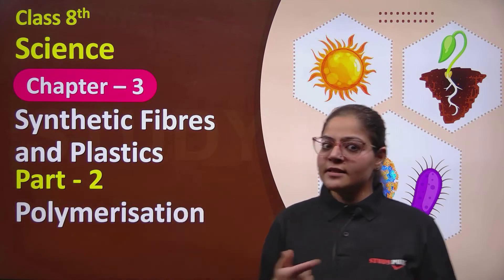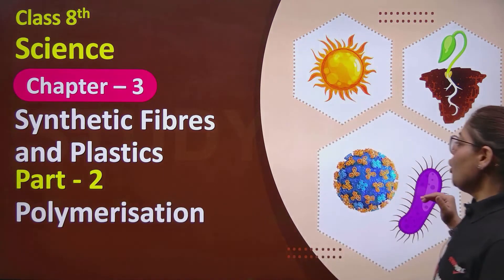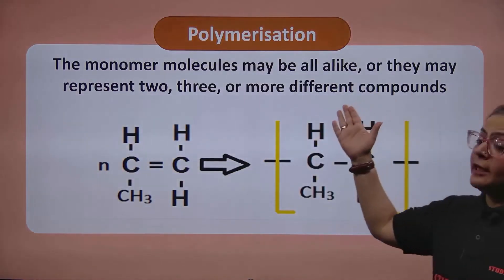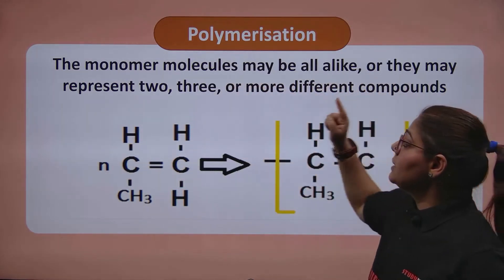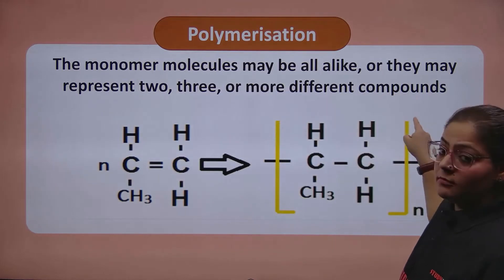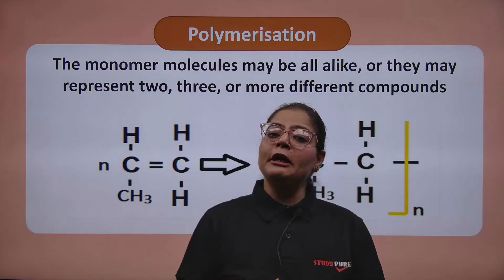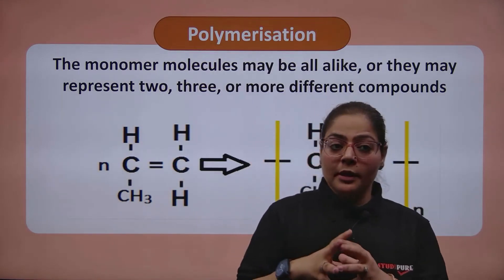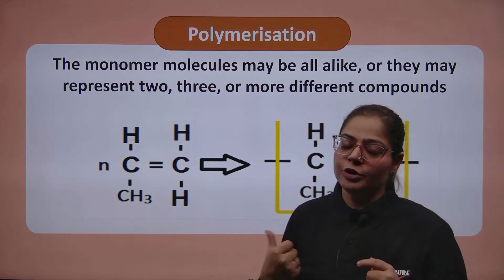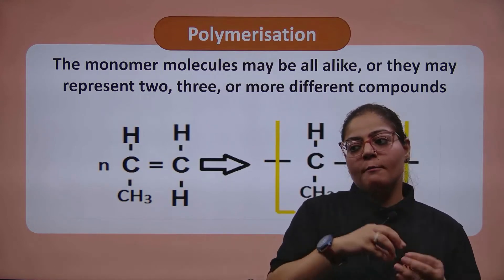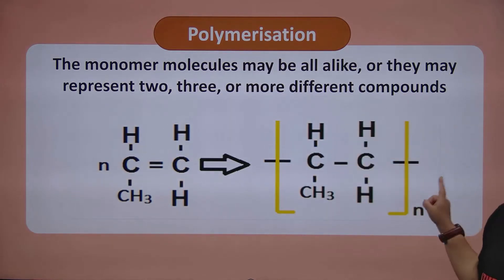Welcome back kids, now let's start part 2: polymerization. As promised in part 1, I have already told you what is actually happening in a polymerization reaction — the monomer molecule may be all alike or they may represent two, three or more different components. So let's jump to monomers. A monomer is a repeating unit that forms polymers. When we start experimentation, our first job is to choose the right monomer — a unit that we repeat again and again — and through a polymerization reaction we get a polymer.